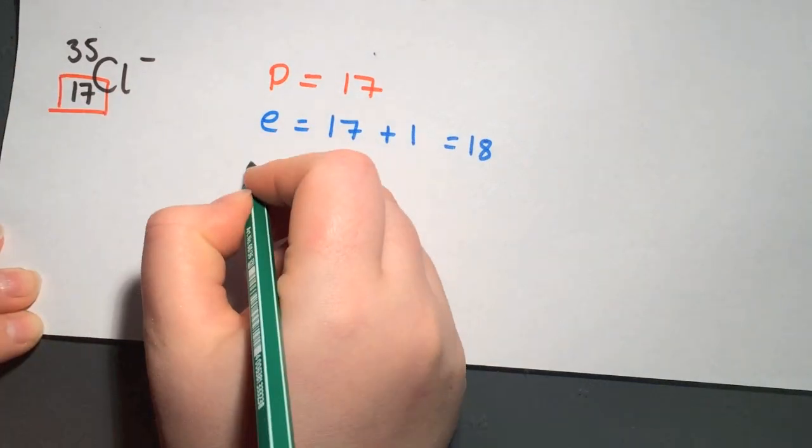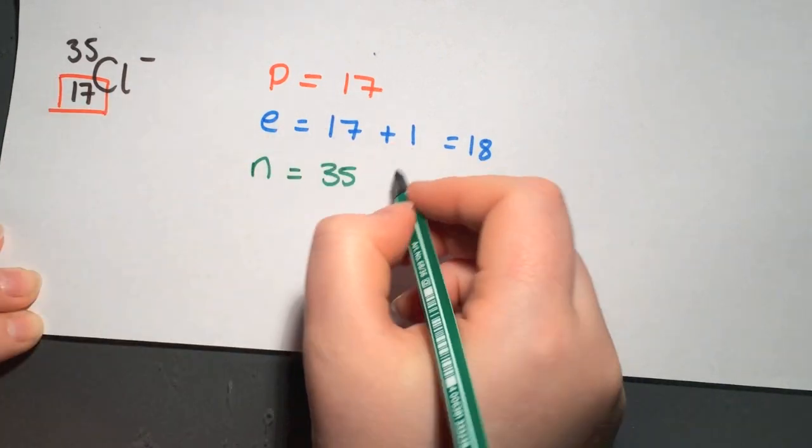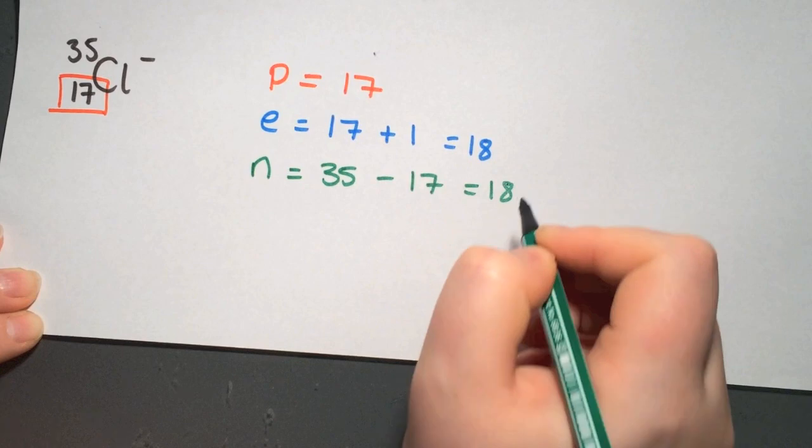And then finally the neutrons. It is a mass number which is 35 minus 17 protons to give us 18 neutrons.